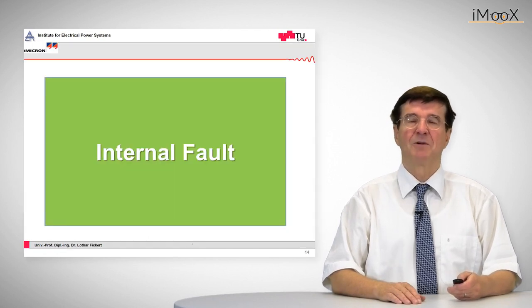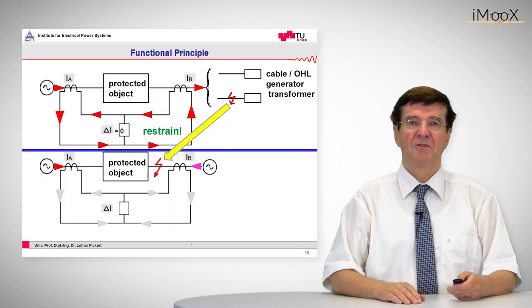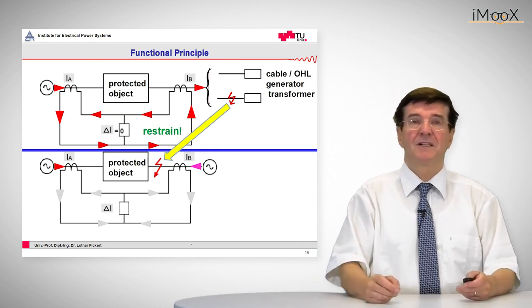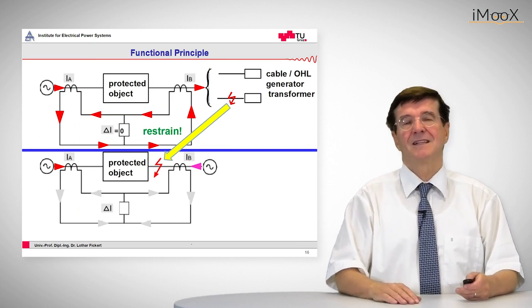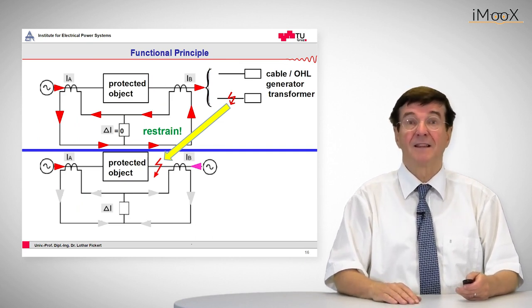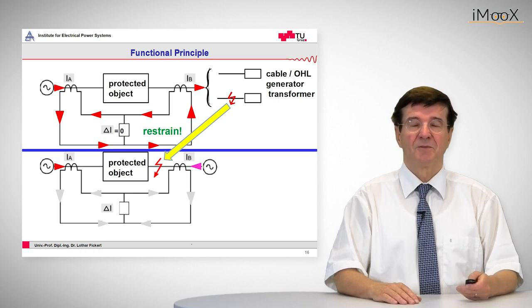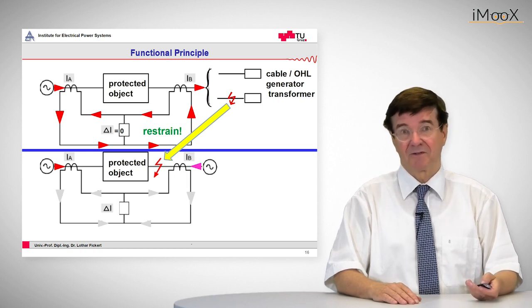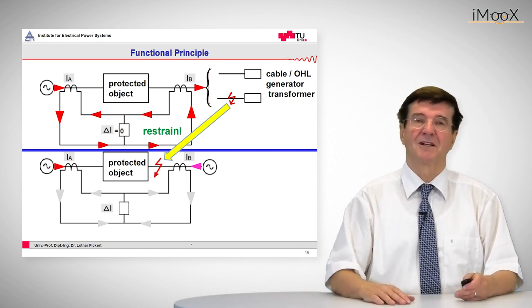A big difference is when we have an internal fault. So in case of an internal fault, the faulty point has moved into the protected area. And now let's see about the currents and their polarity. So from the left side we have the current from source A. On the right side we have the current from source B.